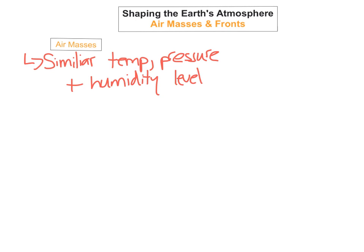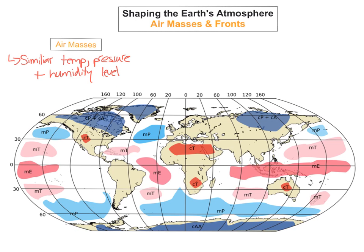As you can see in this world map here, you can see all the different types of air masses. Like we said, an air mass is a large body of air that has similar temperature, pressure and humidity levels. Air masses can be defined according to their region of origin and the course they travel.